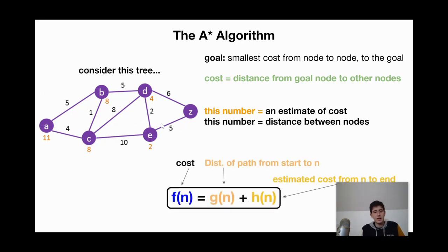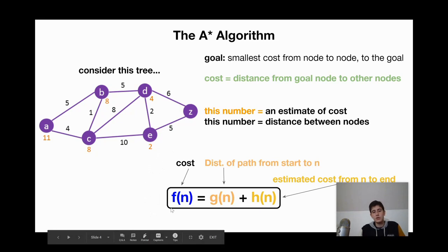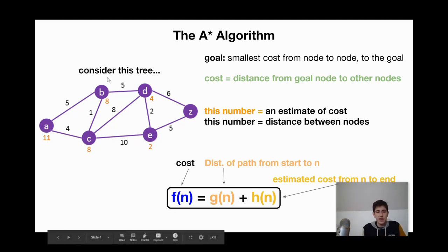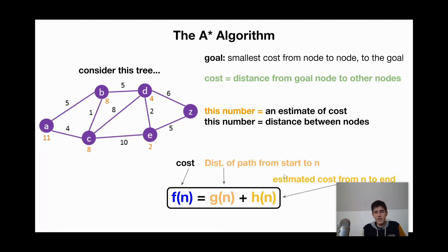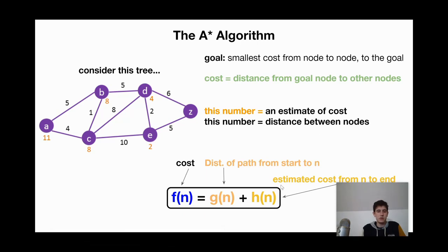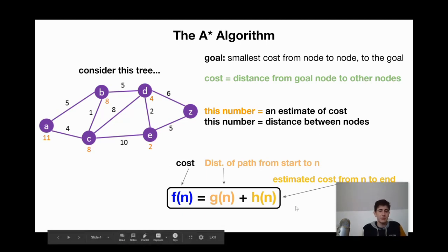And so now we can calculate cost. Cost is a function of N, F of N, is equal to the distance of a path from the start node. So for example, from A to the nth node, to any random node. So the nth node could be B, C, D, or E in our case. And H of N, which is a heuristic that I'm going to talk about in a minute, is the estimated cost from the nth value or the nth node to the end.